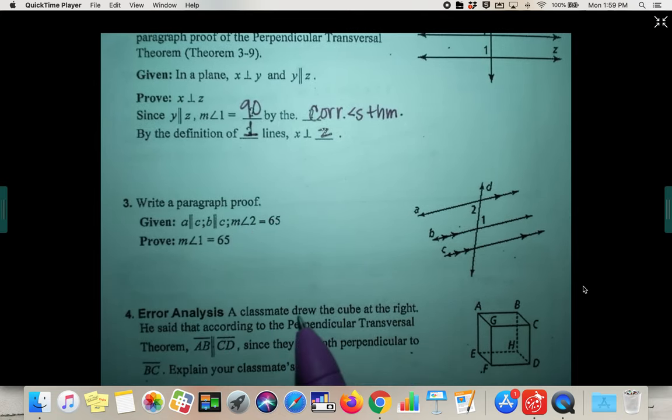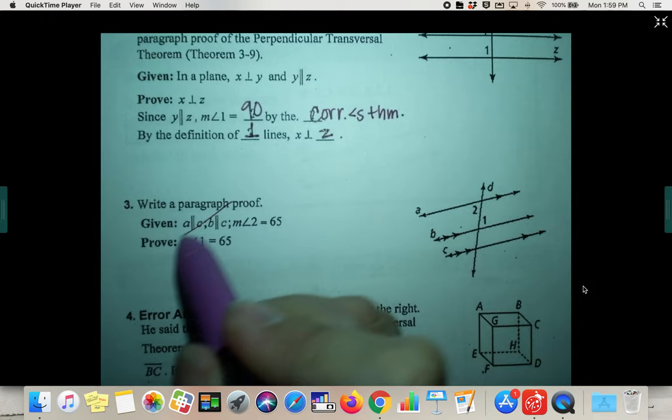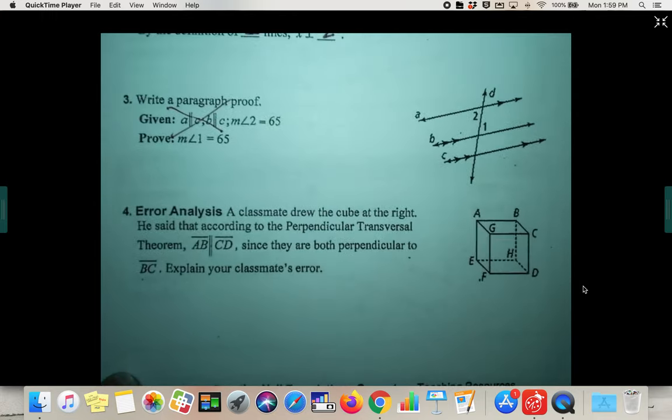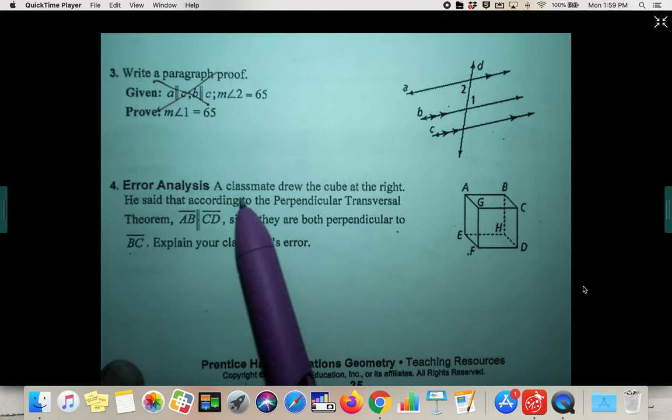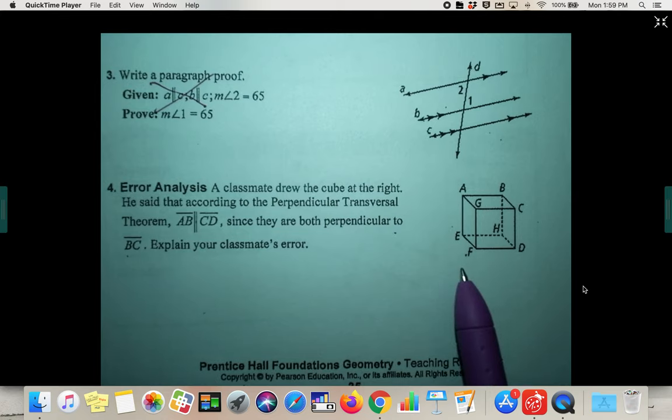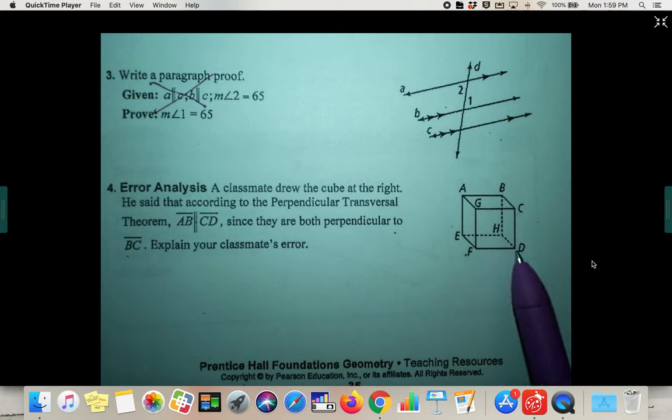And again, I'm going to abbreviate a bunch, so it's not going to be a full paragraph. But actually, you know what, we're not going to do three. I forgot. I'm sorry, because we did two, which is kind of the same thing. There's not enough room really to write out three, but we are going to look at four. A classmate drew this cube over here at the right. He said that according to the perpendicular transversal theorem, segment AB is parallel to segment CD,